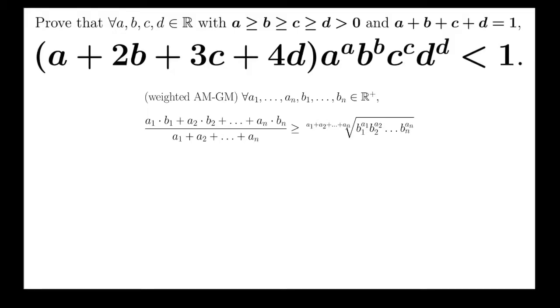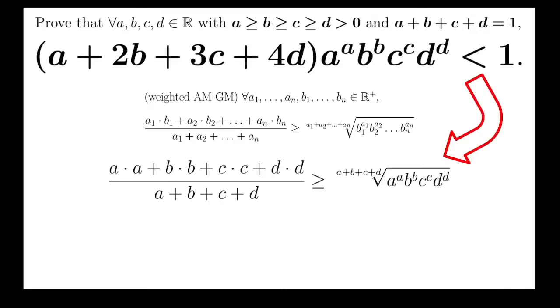So with this result, I can say that A to the A times B to the B times C to the C times D to the D to the A plus B plus C plus D root is less than or equal to that fraction. And that fraction, using the fact that A plus B plus C plus D equals 1, could be simplified into A2 plus B2 plus C2 plus D2. And at the same time, the so-called A plus B plus C plus D root is simply just the term itself because that sum is just 1. So now we have the inequality A2 plus B2 plus C2 plus D2 is greater than or equal to A to the A times B to the B times C to the C times D to the D.